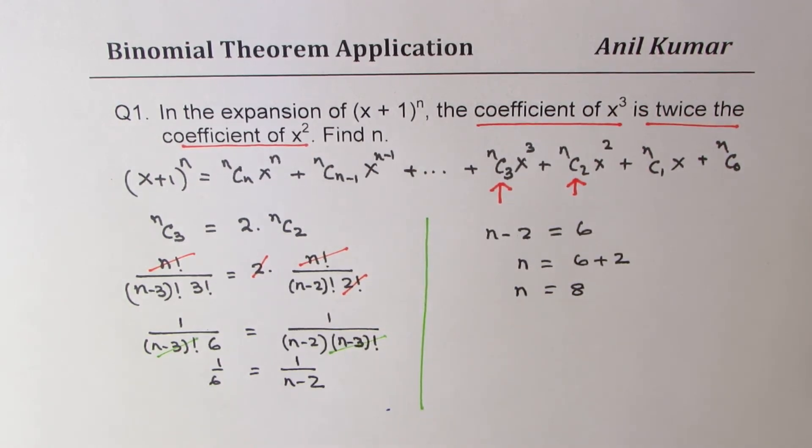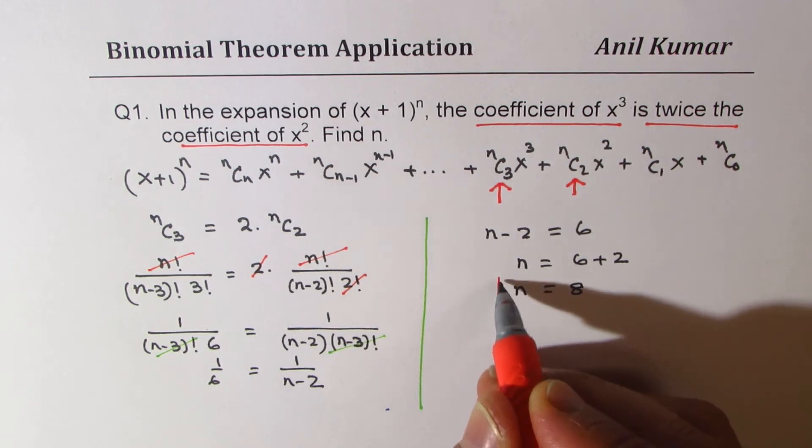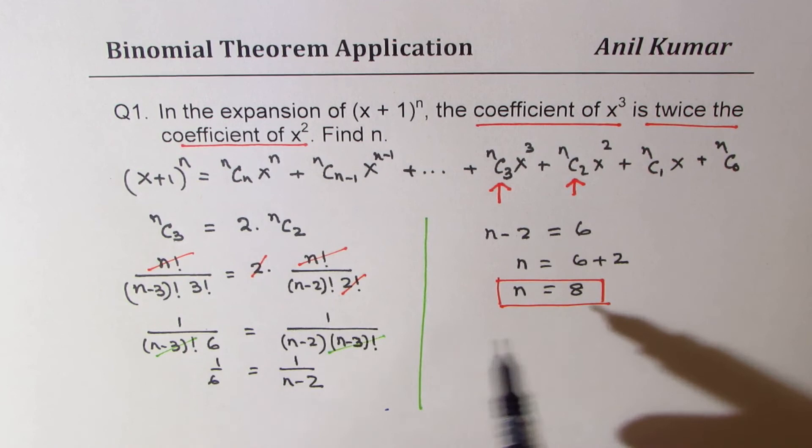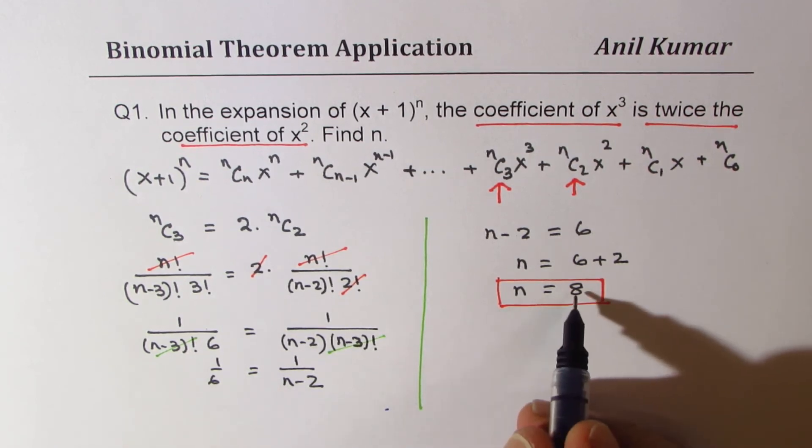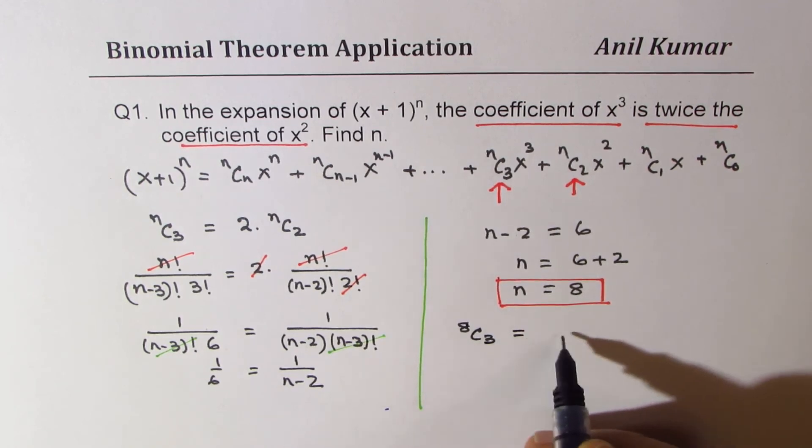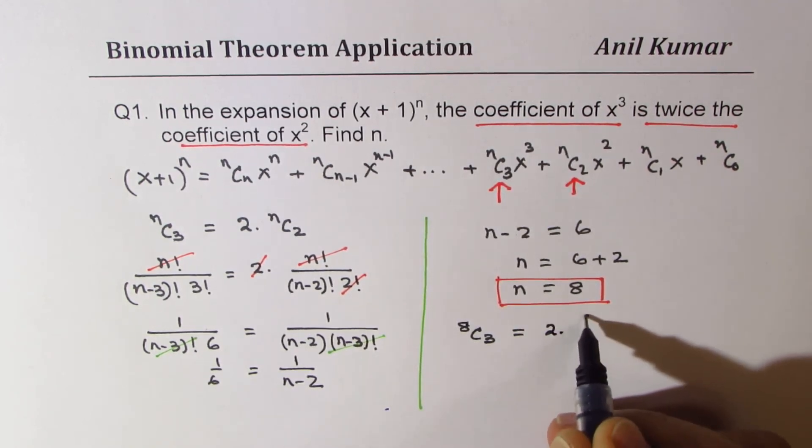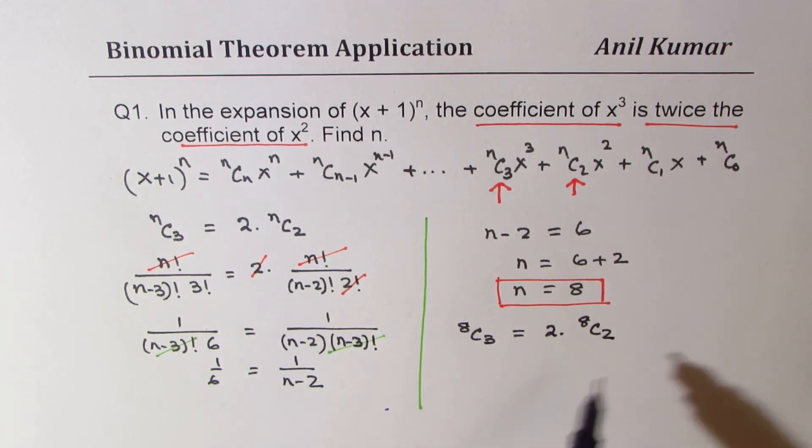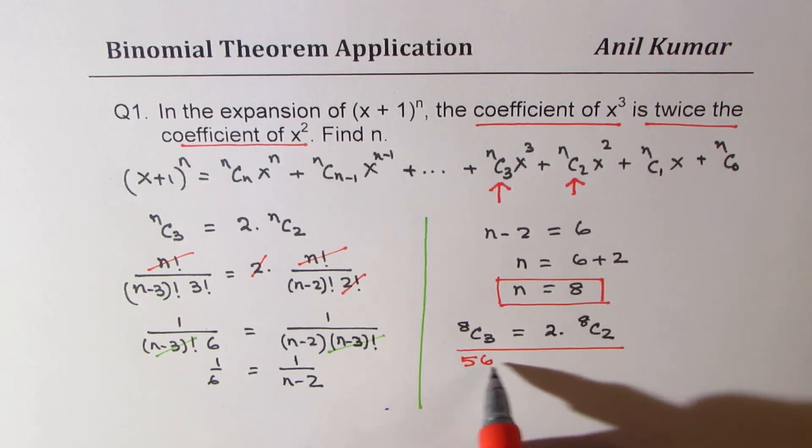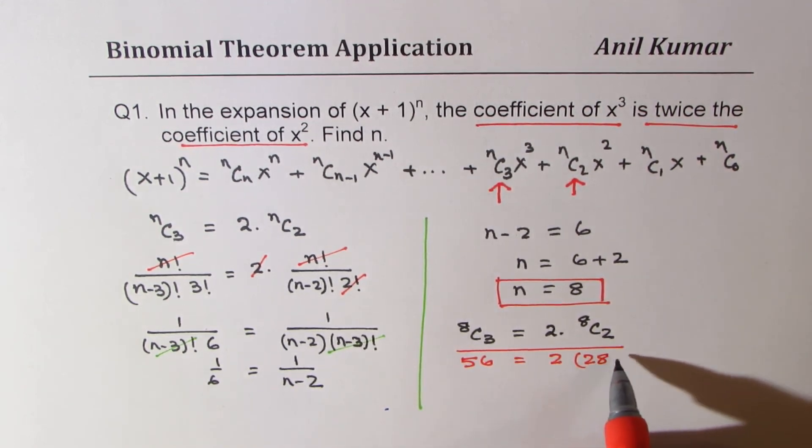So that is the solution. You could actually verify your solution also with calculator. You will notice that if n is 8, then this term will be 8C3. And 8C3 is indeed twice 8C2. Using calculator, you can verify this: 8C3 is 56 and 56 is 2 times 28. So that is a check for your answer. I hope that makes sense.